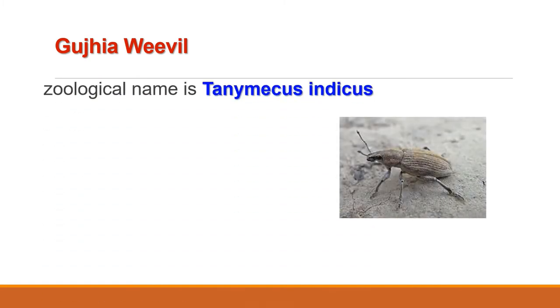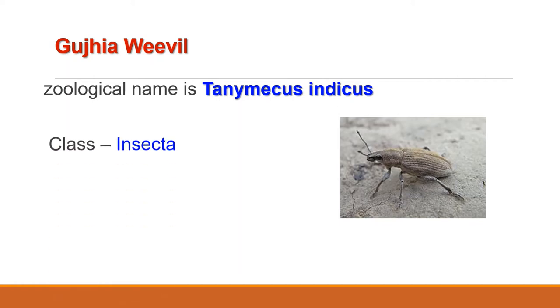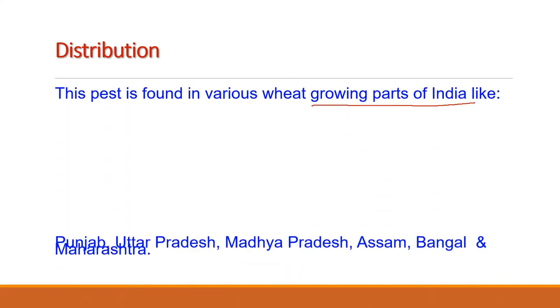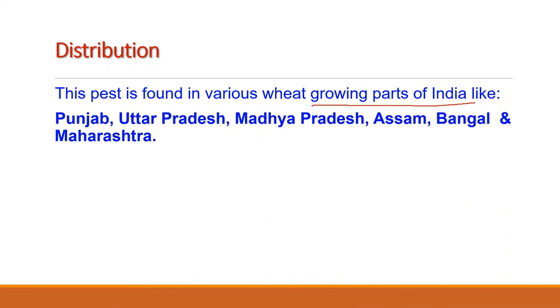The next pest is Gujia weevil. The zoological name is Tanymecus indicus. As far as classification is concerned, it belongs to Phylum Arthropoda, Class Insecta, Order Coleoptera, Family Curculionidae, Genus Tanymecus and Species indicus. This pest is found in various parts of India like Punjab, Uttar Pradesh, Madhya Pradesh, Assam, Bengal, Chennai and Maharashtra.